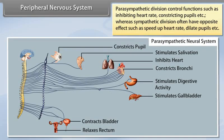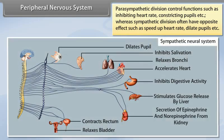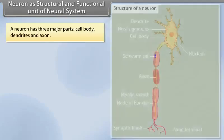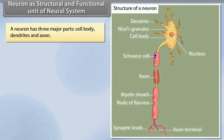Autonomic neural system can be further classified into parasympathetic neural system and sympathetic neural system. Parasympathetic division controls functions such as inhibiting heart rate, constricting pupils, etc., whereas sympathetic division often has opposite effects such as speeding up heart rate, dilating pupils, etc.